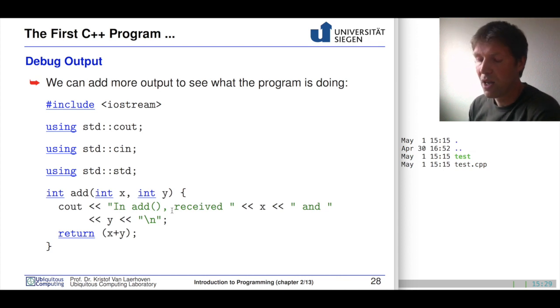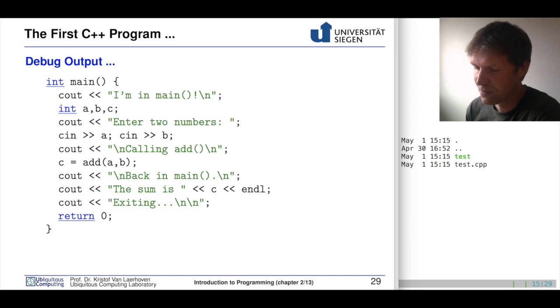And we can actually then show in the terminal what is happening where into our program. Now, this is a very sloppy way of doing debugging in your program. But for us, I think this is the easiest way for now. So we'll start with this. And the same for the main function.